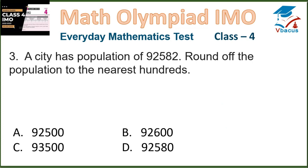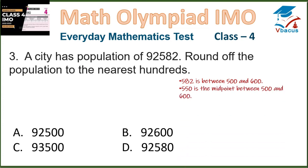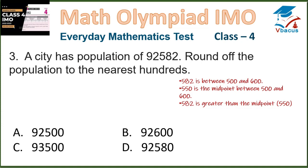Let us go to the next sum. A city has a population of 92,582. Round off the population to the nearest hundreds. The hundreds place digit is 5. So we look at 582 — it is between 500 and 600. The midpoint is 550. Since 582 is greater than 550, it rounds up to 600. Copying the remaining digits 92, the answer is 92,600, which is option B.